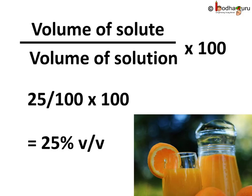V/V means volume by volume concentration. This is when we add a liquid to another liquid. Say the concentration of a fruit juice is 25 V/V, which means there is 25 ml of fruit juice in every 100 ml of solution. It's not 100 percent fruit juice then, right? So hopefully now you can calculate the concentration of different things in cold drinks, fruit juices, etc. by reading the label when you buy it.